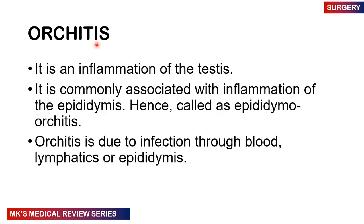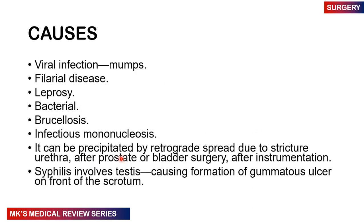Orchitis is inflammation of the testes and is commonly associated with inflammation of the epididymis, so we often refer to the condition as epididymo-orchitis. Orchitis is due to infection spread to the testes through the blood, lymphatics, or epididymis. Causes include viral infections — mumps is very common — venereal disease, leprosy, bacterial infections, brucellosis, and infectious mononucleosis. It can also be precipitated by retrograde spread due to urethral stricture, or after prostate or bladder surgery or instrumentation. Syphilis involving the testes can cause gummatous ulcers on the front of the scrotum.